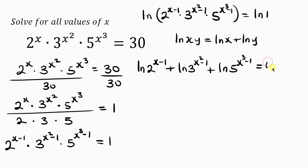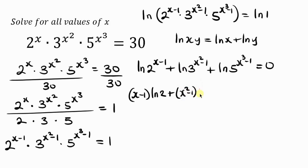Our next step is to apply the power rule of logarithms, which lets us bring the exponent down as a multiplier. So we get: (x−1)ln 2 + (x²−1)ln 3 + (x³−1)ln 5 = 0.